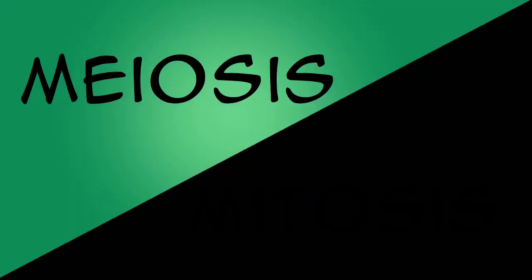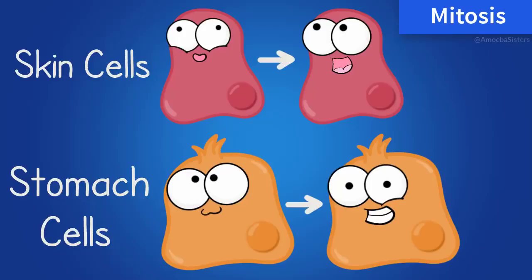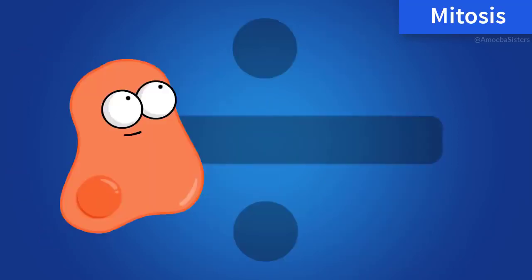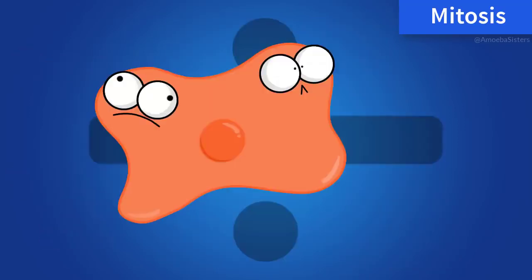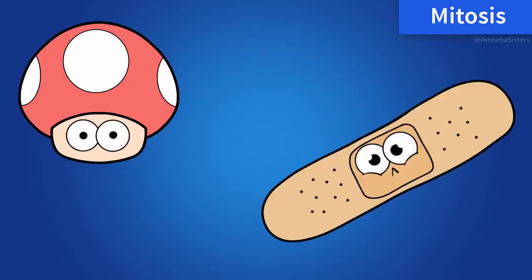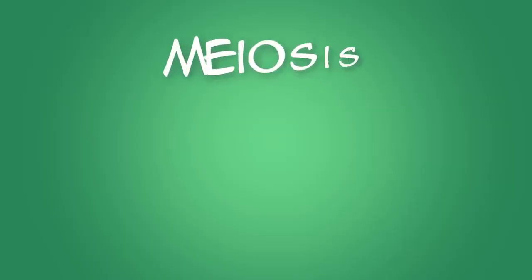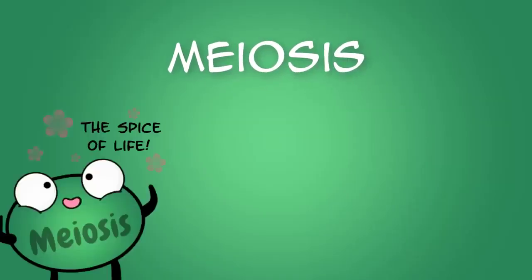Not to be confused with mitosis, which sounds unfortunately similar. Mitosis makes identical body cells like your skin cells and stomach cells. Recall from our mitosis clip that since it makes identical body cells, mitosis is important for growth and for repair of damage or to replace worn out cells. But not meiosis. Meiosis is a process that contributes to genetic variety.